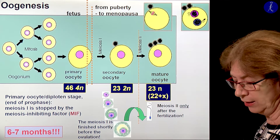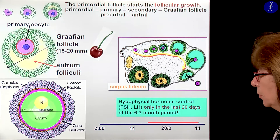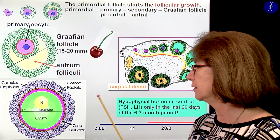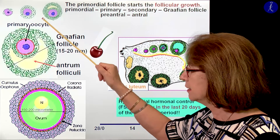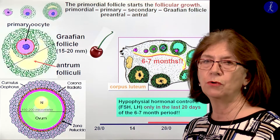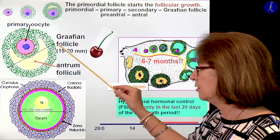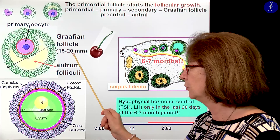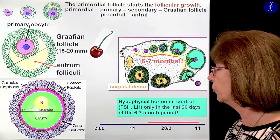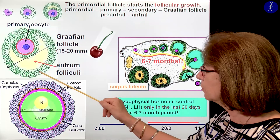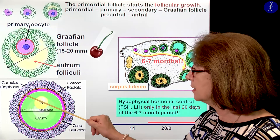Just a little bit about the follicular growth. We have these names — primordial follicle, primary, secondary, and Graafian follicle. It may be better to call them pre-antral and antral, because if it already has a cavity, we call it the antral follicle. This late antral follicle — the Graafian follicle — is ready to ovulate with a diameter of 15 to 20 millimeters, about the size of a cherry. Within this Graafian follicle there is the cumulus oophorus, and within it we have granulosa cells. The innermost layer forms the so-called corona radiata.